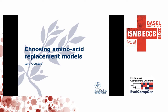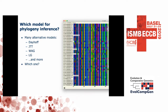I want to talk about choosing amino acid replacement models. The background is that you want to infer a phylogenetic tree given a multiple sequence alignment. And you might want to use the best model to increase your likelihood. There are always a number of possible alternatives to choose from — it could be DAY-OFF, or others. So how should you choose the model?